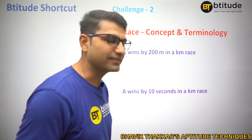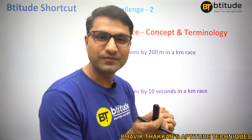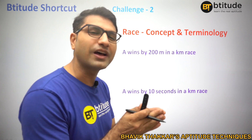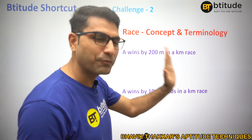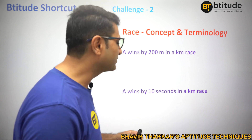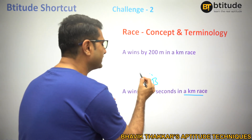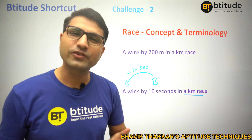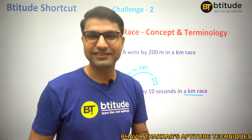What about 'A wins by 10 seconds in a kilometer race'? When winning by distance, both run for the same time but A covers more distance. Here, winning by time means both are running the same distance — both run a kilometer — but A is taking 10 seconds less than B, because he is winning. Rather than going for any tricks, just try to understand the logic as it is.